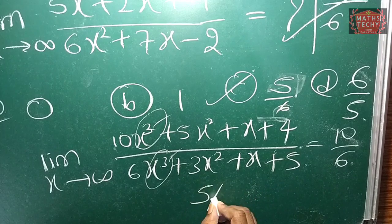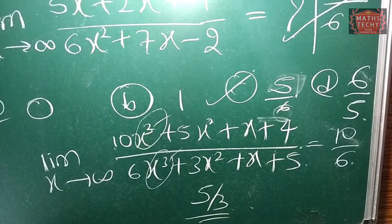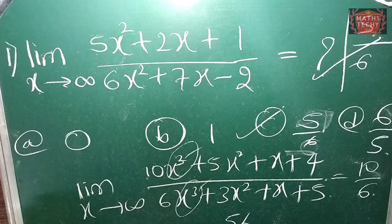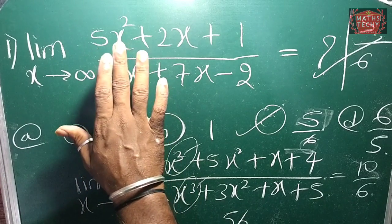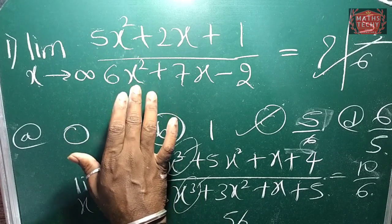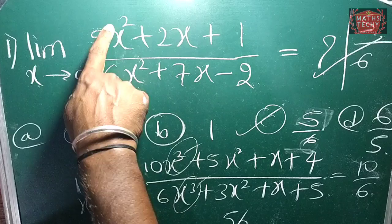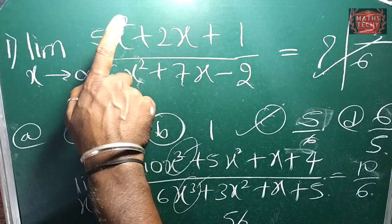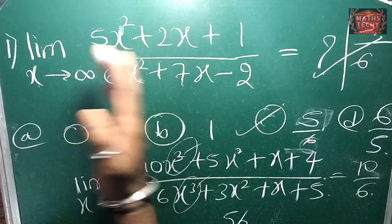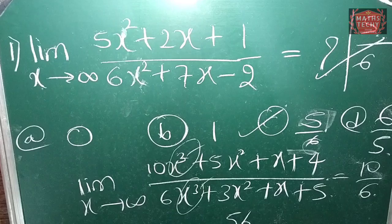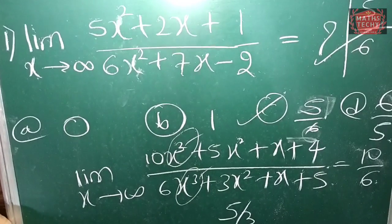Then you simplify and the answer becomes 5/3. So this model of problem: numerator degree and denominator degree are equal, so the coefficient gives you the answer.